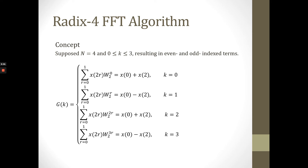Now, the radix-4 FFT algorithm for N equal to 4. Therefore, the calculation is from 0 until N minus 1, so from 0 until 3.